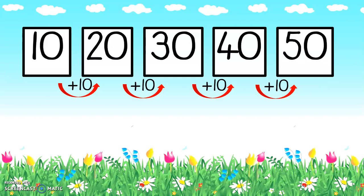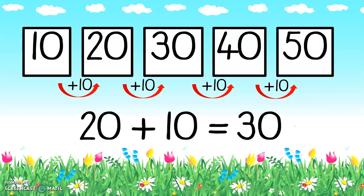So our number pattern is counting in tens. If I had to do a sum, it would be twenty plus ten gives me thirty. And if I had to say thirty plus ten, it would give me forty. Let's count in number patterns of ten: ten, twenty, thirty, forty, fifty. Well done, great twos.